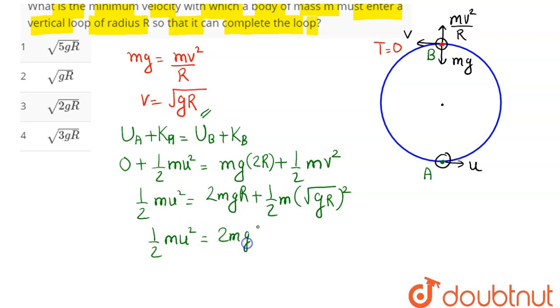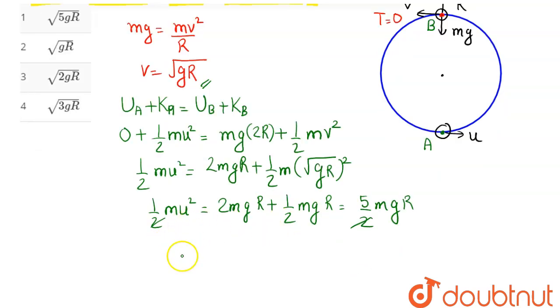Which here on simplification comes as 5 by 2 mgR. Now 2 and 2 cancels both sides, so we can say here m and m. So u comes here as root under 5gR. Hence the minimum velocity at the lowest position so that it can complete the loop is root 5gR, which is option number 1. Hence 1 is the correct answer.